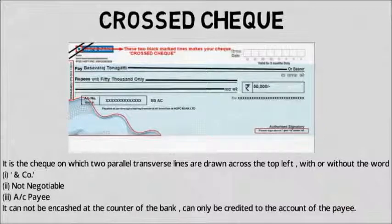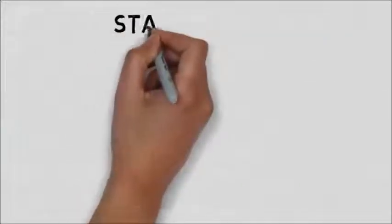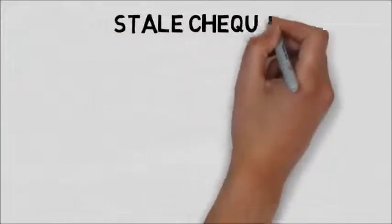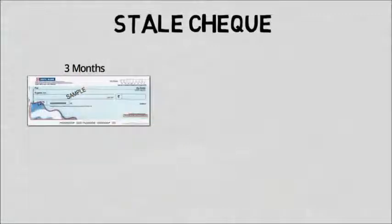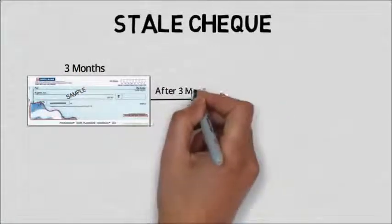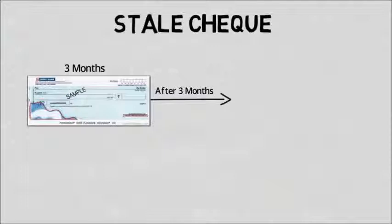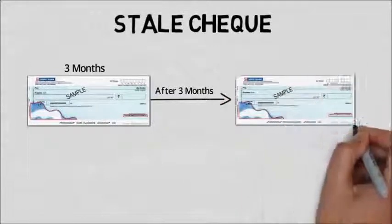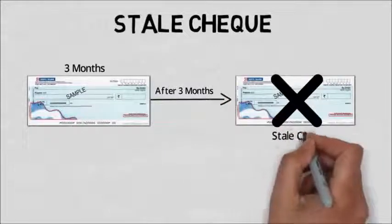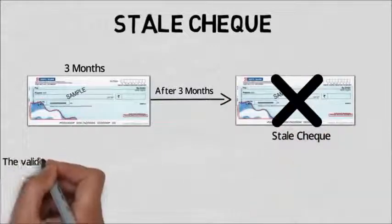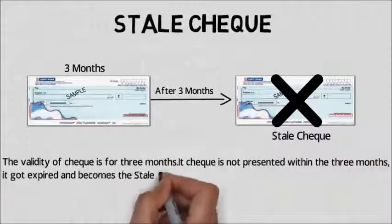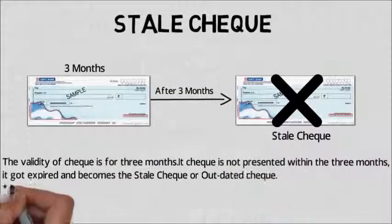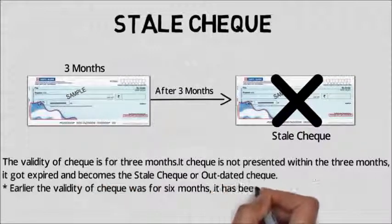The third and last type of check is the stale check. A stale check is valid only for 3 months. If the check is not presented within 3 months, it expires and becomes a stale or outdated check. Earlier, the validity of a check was 6 months, but it has been reduced to 3 months with effect from 1st April 2012.